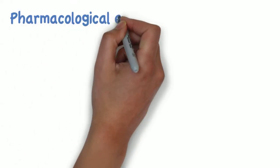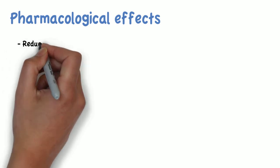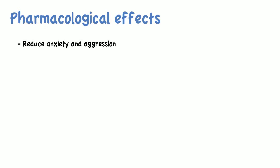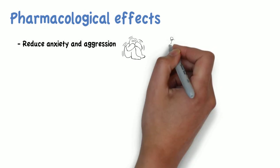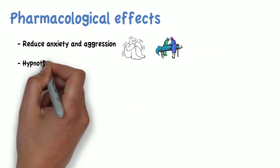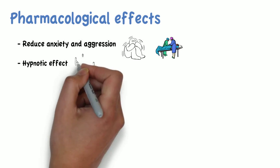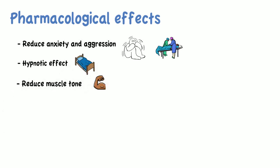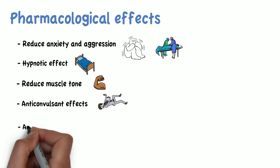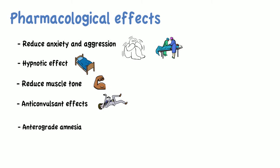As for their pharmacological effects, benzodiazepines reduce anxiety and aggression. They are usually used for the management of acute anxiety and also often given before medical procedures such as surgeries and endoscopies. They have a hypnotic effect, so they induce sleep. They reduce muscle tone. They have anticonvulsant effects and also present with anterograde amnesia, meaning that benzodiazepines will prevent the memory of events experienced while under their influence.